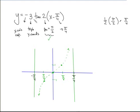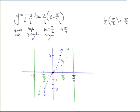Next, I triple the y-coordinates: triple 0 stays 0, triple 1 becomes 3, triple negative 1 becomes negative 3. Now my graph is taller and steeper. That handles tripling the y-coordinates. Then I do the x-axis reflection: the 0 stays put, the 3 flips down to negative 3, and the negative 3 flips up to positive 3. After the x-axis reflection, the curve now looks like our cotangent graph — curving the same way as cotangent — just not in the same location yet.